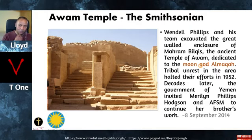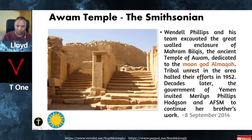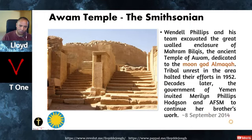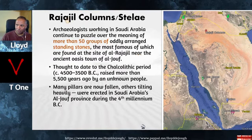Wendell Phillips worked for the Smithsonian doing archaeological excavations in 1952. Decades later, the government of Yemen invited his daughter Marilyn Phillips to continue that work. Now let's have a look at the Rajajil — sometimes Rajalil — columns or stelae. Archaeologists working in Saudi Arabia continue to puzzle over the meaning of more than 50 groups of oddly arranged standing stones, the most famous of which are found at the site of Rajajil near the ancient oasis town of Al-Jauf.